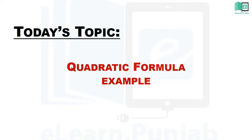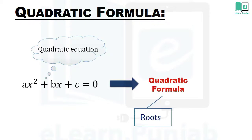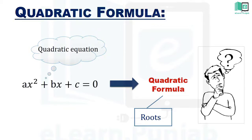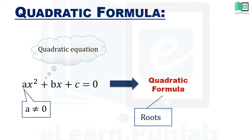Let's get started. Quadratic Formula — Example: Quadratic equations का quadratic formula के मदद से roots मालूम करना, अगर ये मौजूद हो तो। Quadratic formula क्या है? अगर quadratic equation की general form Ax² + Bx + C = 0 हो, जहां A ≠ 0, तो quadratic formula की मदद से roots मालूम किये जा सकते हैं।